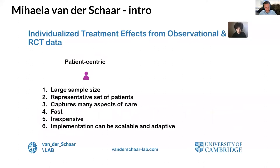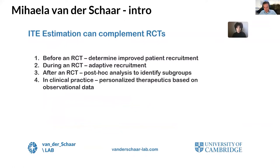In contrast, we can learn individualized treatment effects from observational data. Using observational data, we can use large sample sizes that include representative patients and capture many aspects of care. Because we can learn effectively using machine learning from such data, approaches can be fast, inexpensive, and provide scalable and adaptive implementations. ITE estimation can complement randomized controlled trials — for instance, before a trial we can determine which patients would most benefit from receiving a new drug and enroll those patients.